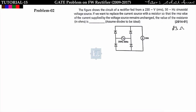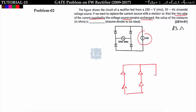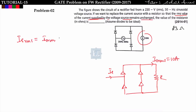The next problem involves a rectifier circuit fed from a 230V, 50Hz sinusoidal voltage source with a 10-ampere current source load. We want to replace the current source with a resistor R such that the RMS value of current supplied by the voltage source remains unchanged. So the RMS source current must remain equal to 10 amperes.